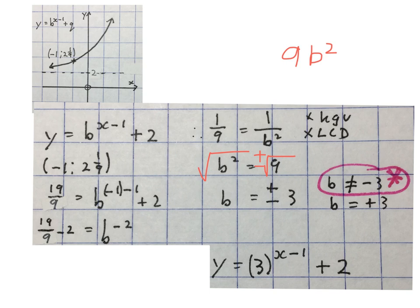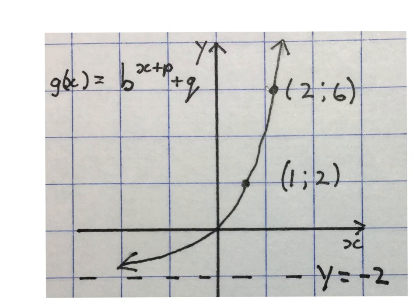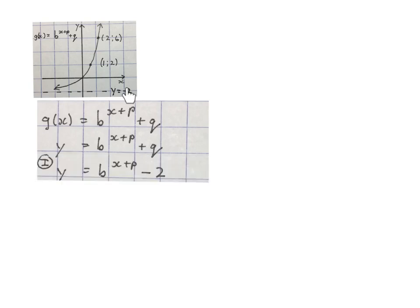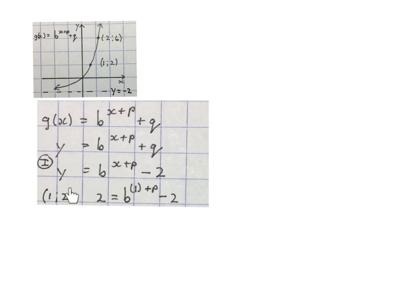Stop the video and get your brain around this. Our next sketch asks us to work out the equation. They say g(x) = b^(x+p) + q. They gave us coordinates on this sketch and the asymptote y = −2. We start with the equation, rewrite it as y =, and substitute the asymptote in place of q: minus 2. Then I choose one of the coordinates — I started with (1, 2). I took 1 and replaced it in place of x, and 2 replaced it in place of y. I rewrote the formula, then added 2 to both sides to simplify, and numbered this equation 1. I still have two variables so I can't simplify further.